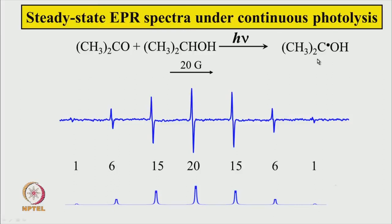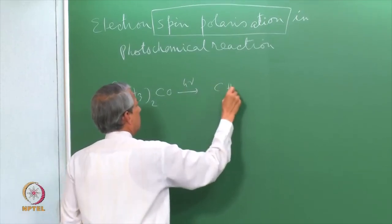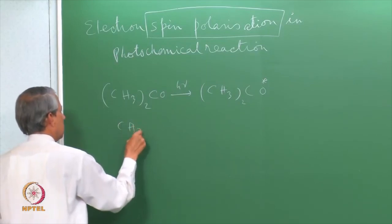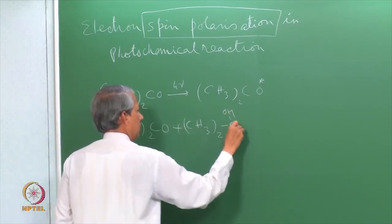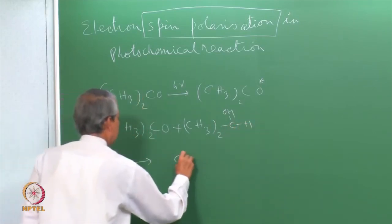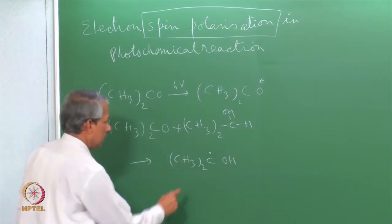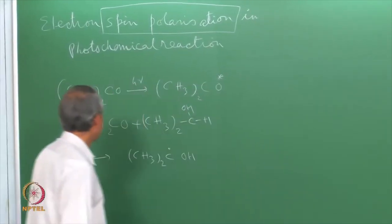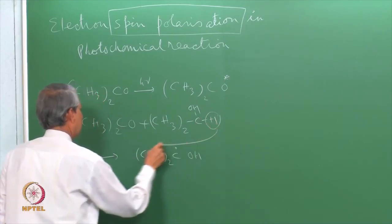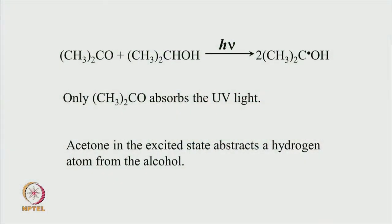The chemical reaction is that acetone absorbs light, goes to an excited state, and some reaction takes place there. This is the isopropanol radical that we see here. These protons give the major seven-line EPR spectrum, with a little spreading from another proton. The reaction is that a hydrogen atom gets abstracted by acetone to produce two radicals of this kind. Acetone is excited by light and it abstracts a hydrogen atom from the alcohol.